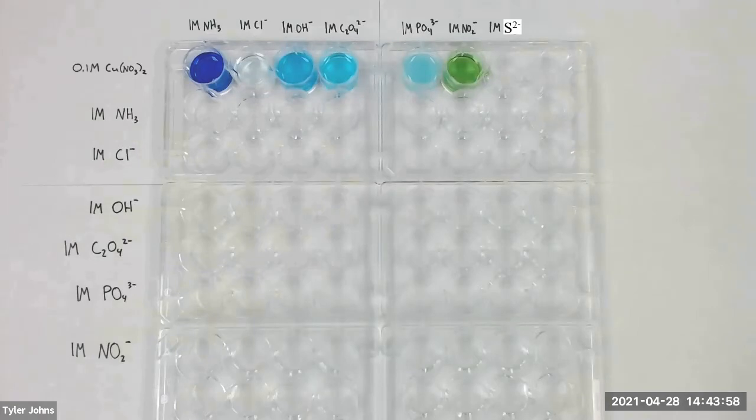We will mix the reagents and note any changes that occur upon the addition of ammonia. Changes that occur indicate a reaction to form a more stable species. Use the reference wells in the top row for comparison.